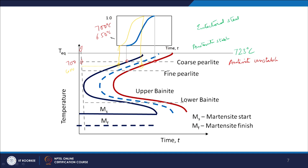From the TTT curve you can see that if you want coarse pearlite, you know at what temperature to hold. With large undercooling there will be more nucleation events, so the microstructure will be fine. At some point the transformation rate reaches a maximum, and then it becomes sluggish again — this is what we call the nose of the TTT curve. Below the nose you get two types of microstructure: upper bainite and lower bainite.